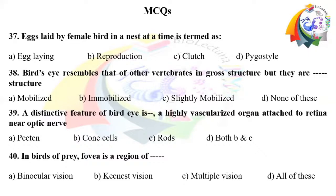Question number 39: A distinctive feature of a bird's eye is dash, which is a highly vascularized organ attached to the retina near the optic nerve. Option A: pecten. Option B: cone cells. Option C: rods. Option D: both B and C.